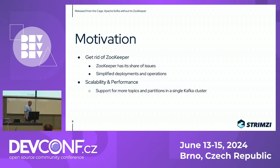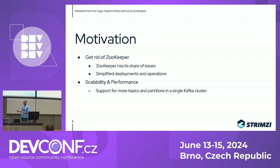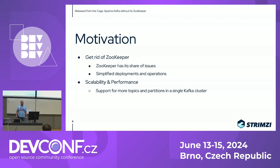ZooKeeper also has its own share of issues. One thing we've seen is issues with DNS, especially when running in environments like Kubernetes where DNS is often eventually consistent. ZooKeeper sometimes doesn't do a great job re-resolving DNS, which can cause it to get stuck. So getting rid of these issues would be nice as well.